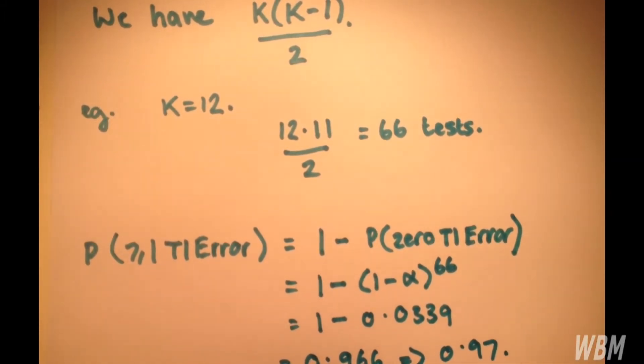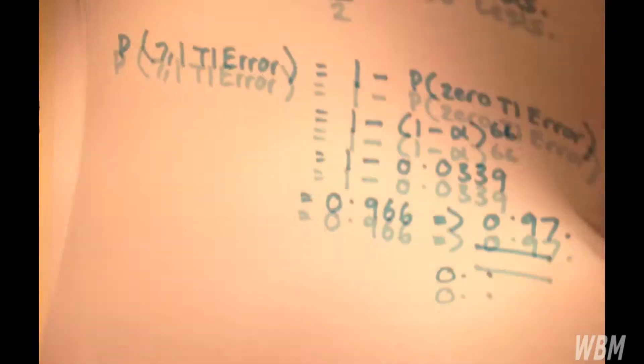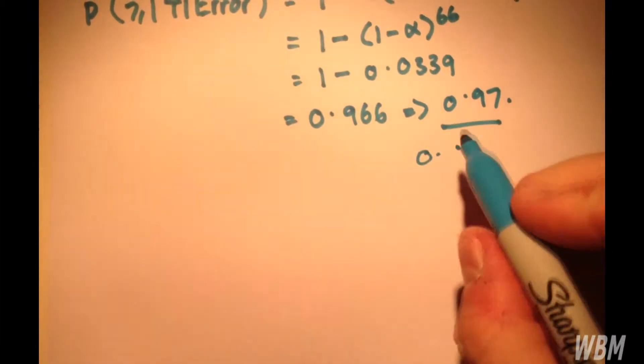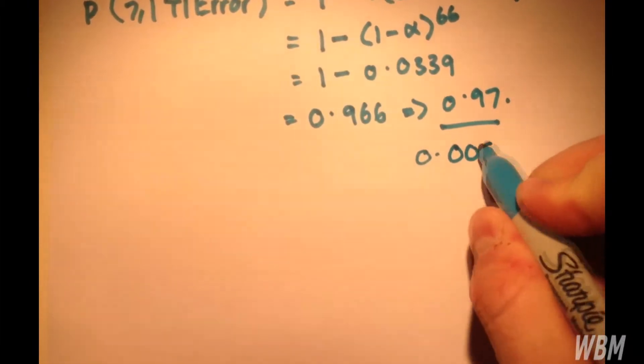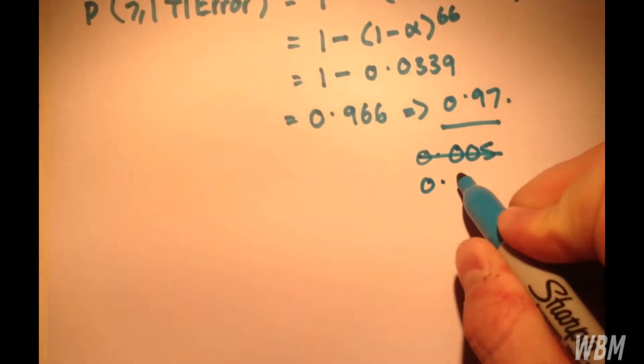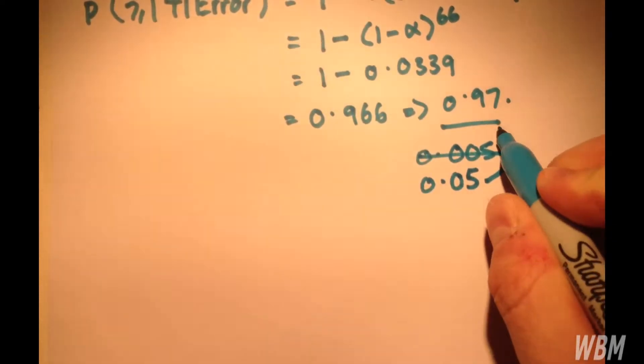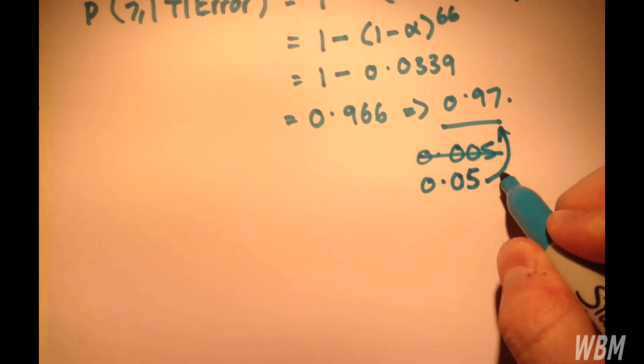So, when we originally want something like 0.05 and we're ending up with 0.97, the inflation here for 66 is huge.